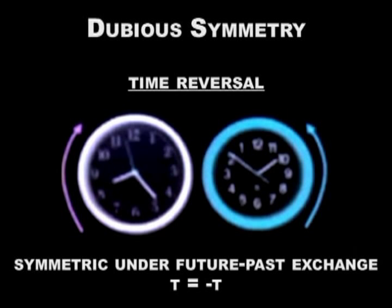Here's another symmetry: time reversal. If instead of going forward in time I go backward, will things look the same? Well, it really doesn't seem like it, because my hair's not getting any less gray. Time has an arrow. So this looks to me like a completely obviously broken symmetry.